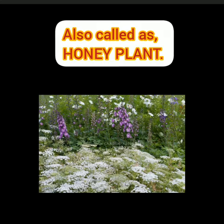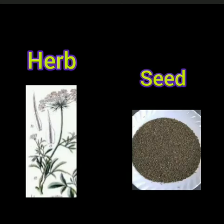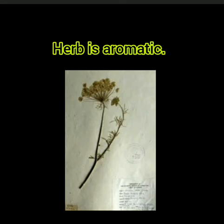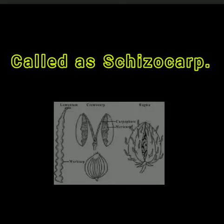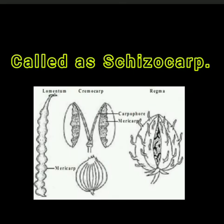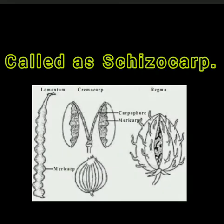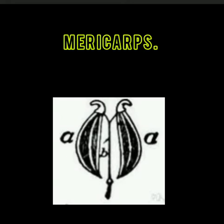Bishop's weed is a honey plant. Both the herb and seed can be used. The herb can be used the way we use coriander, dill, or celery for seasoning — it is slightly aromatic. For commercial purposes, the seed is the economic part. The fruit in umbelliferous plants is botanically called a schizocarp. There are two seeds in each of these fruits, and those are called mericarps.